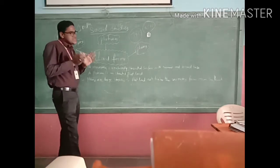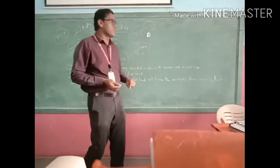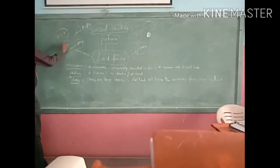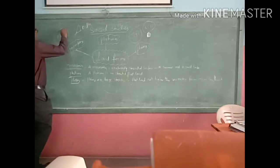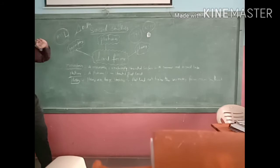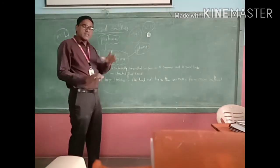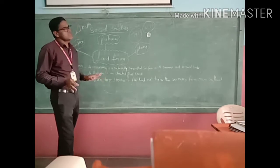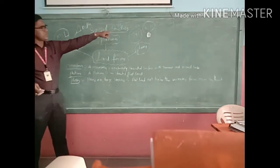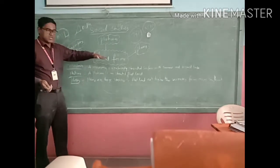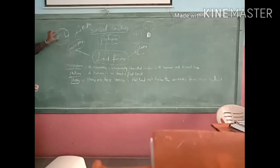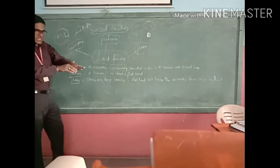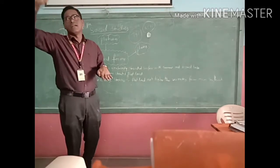To measure the height of the land, we use one important measurement — that is MSL, mean sea level. Earth is a blue planet; nearly 79% of the area is covered with water and only 21% is land. So from the water body, we calculate and measure the height of the land. Mean sea level means from the sea, how many meters height the land is at.